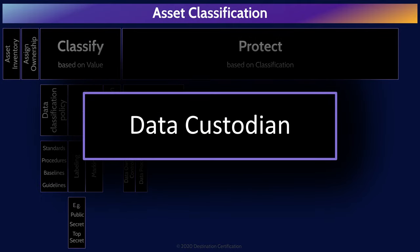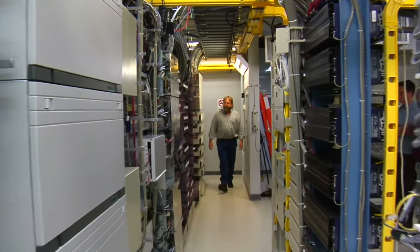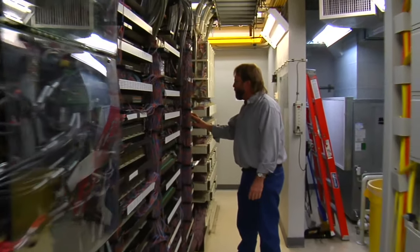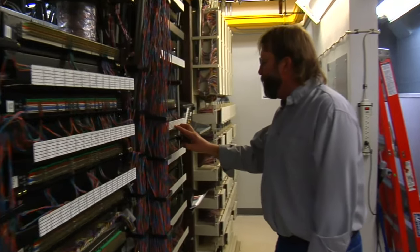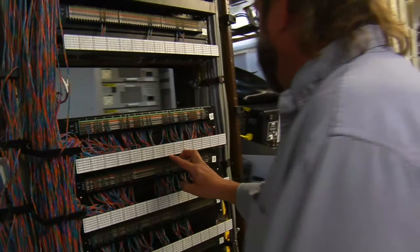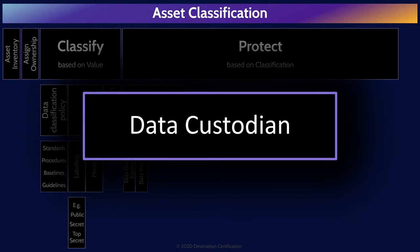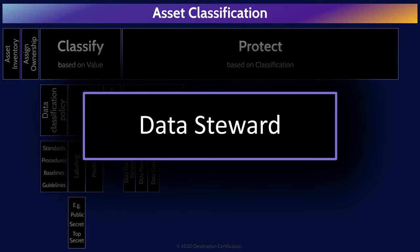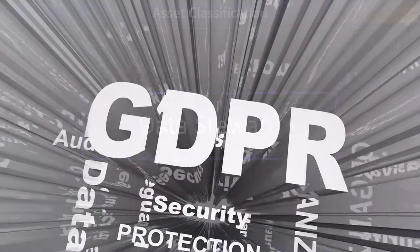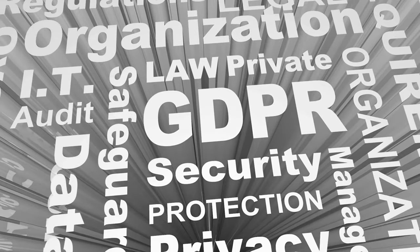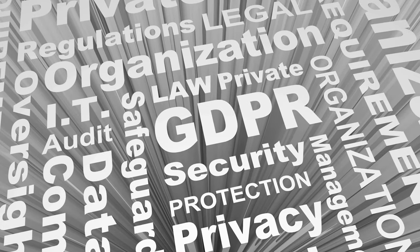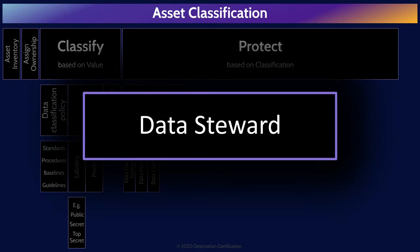Data custodians have technical responsibility for the data, meaning they are responsible for ensuring data security, availability, capacity, that backups are performed, and that data can be restored. Data stewards, on the other hand, have a business responsibility for the data — meaning stewards are responsible for ensuring data governance, data quality, and compliance. Essentially, data stewards are employees from the business who are responsible for ensuring the data is useful for business purposes.